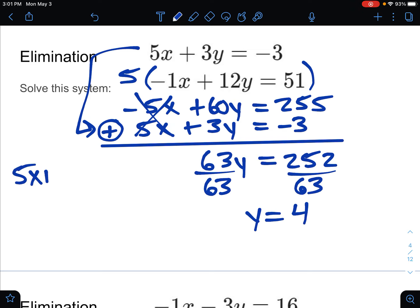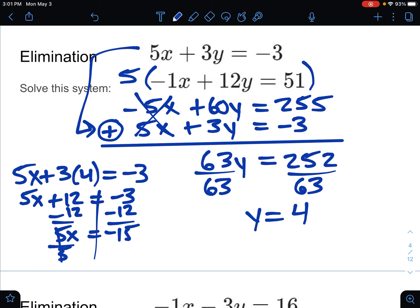So 5x plus 3 times the y, equaling the negative 3. This will make a two-step. So 5x plus 12, equaling negative 3. I'm going to subtract 12 from both sides. So we get negative 15 on the right, 5x on the left. Dividing by 5 gets us our x-coordinate, which is negative 3. So our answer is negative 3, 4. The x and the y to make the solution.